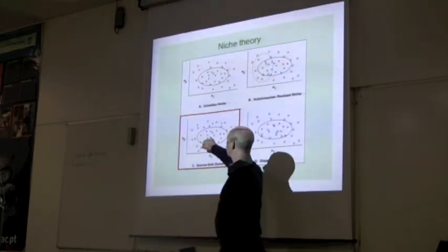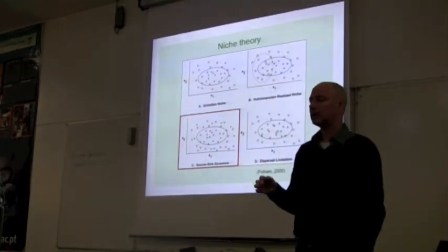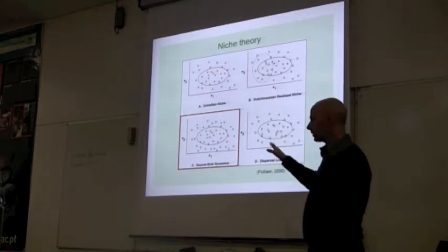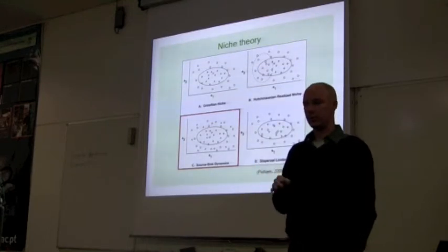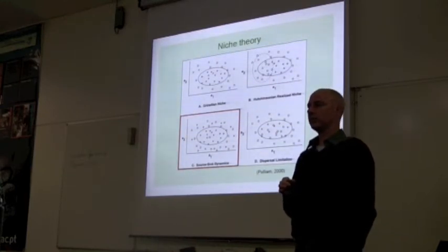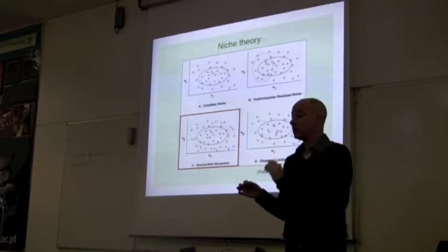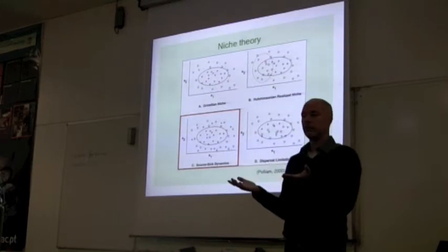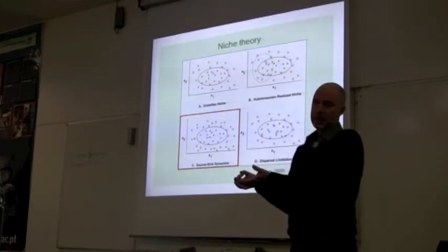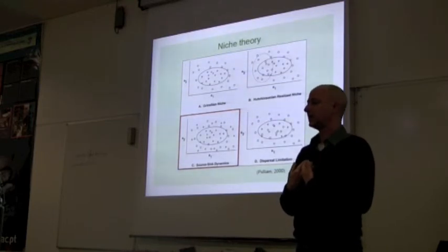But probably that happens in most data sets. Also, you have some absences in areas that are suitable. So even if you said dispersal is not a problem, there's no dispersal restrictions, why would it be with source-sink dynamics that you might have an absence in areas that are suitable? So we can have negatives inside the areas that are suitable. So that's not very helpful either.